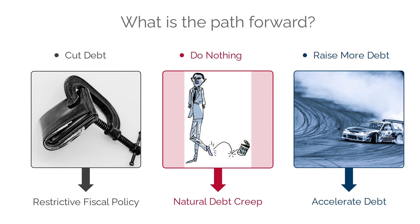So what is the path forward? There are three ways. The U.S. can cut debt — the right thing to do but politically unpopular, as it means cutting social spending, defense spending, and other social services. They can do nothing and let debt levels continue creeping up, effectively kicking the can down the road as they have for the last couple of decades. Or third, there could be another financial crisis or pandemic like COVID, requiring them to issue a lot more debt. All three scenarios will have three totally different effects on your portfolio. We'll be back later with part three.